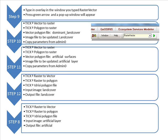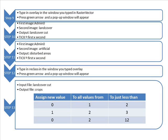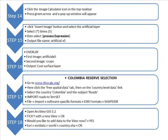By tapping Raster/Vector in the toolbar and pressing the green arrow, tick Raster to Polygon, then tick Idrisi to Polygon file. Overlay the admin0 layer with artificial and tick First Times Second to create a mask artificial layer. Overlay admin0 with your land cover and tick First Times Second to create a mask land cover layer. Type Reclass into the toolbar and input land cover, output crops, to expand your land cover. Using the image calculator, multiply the artificial layer by 5 and process this expression. Overlay that layer with your crops and then divide by 100 for more manageable layers. This creates your cost surface layer.